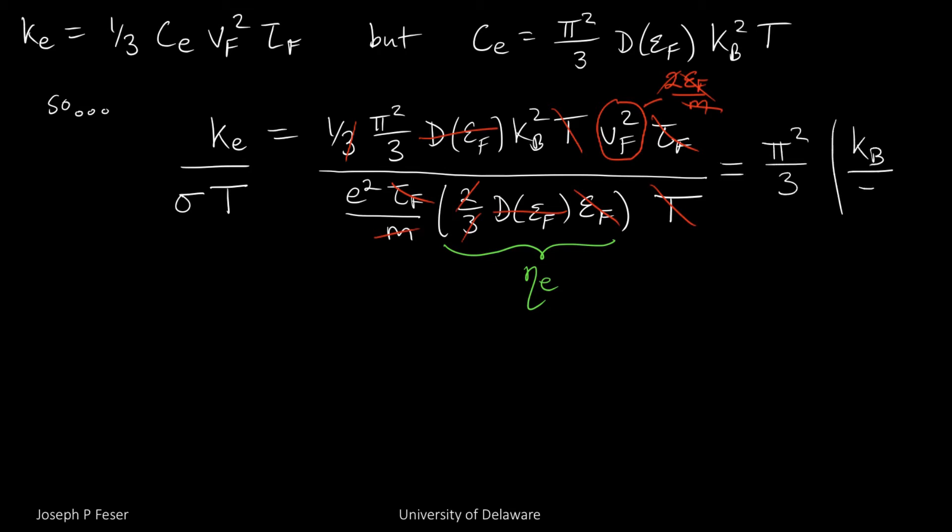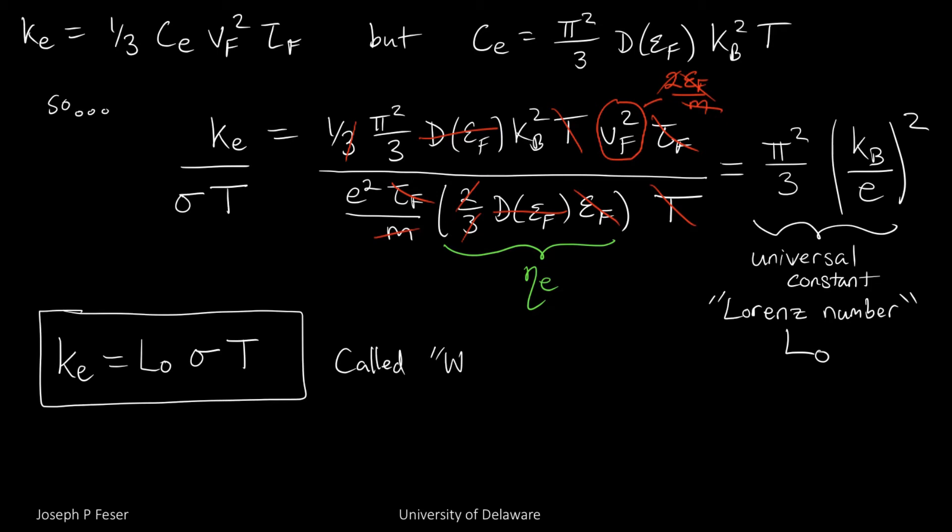What you'll find is that after you're done doing all your cancellation and high-fiving yourself, you'll find that there's a constant, a universal constant basically pops out on the right-hand side. This particular ratio of the thermal conductivity to the electrical conductivity actually contains no properties of the metal itself, like the scattering time, mass of electrons, none of that stuff shows up.